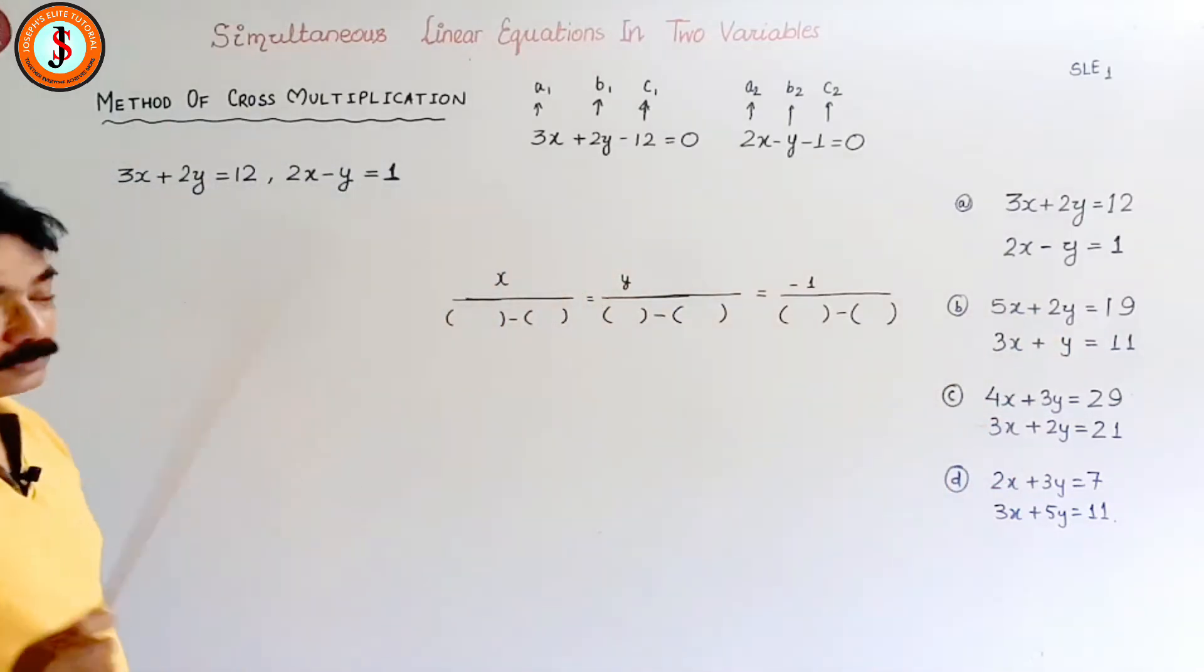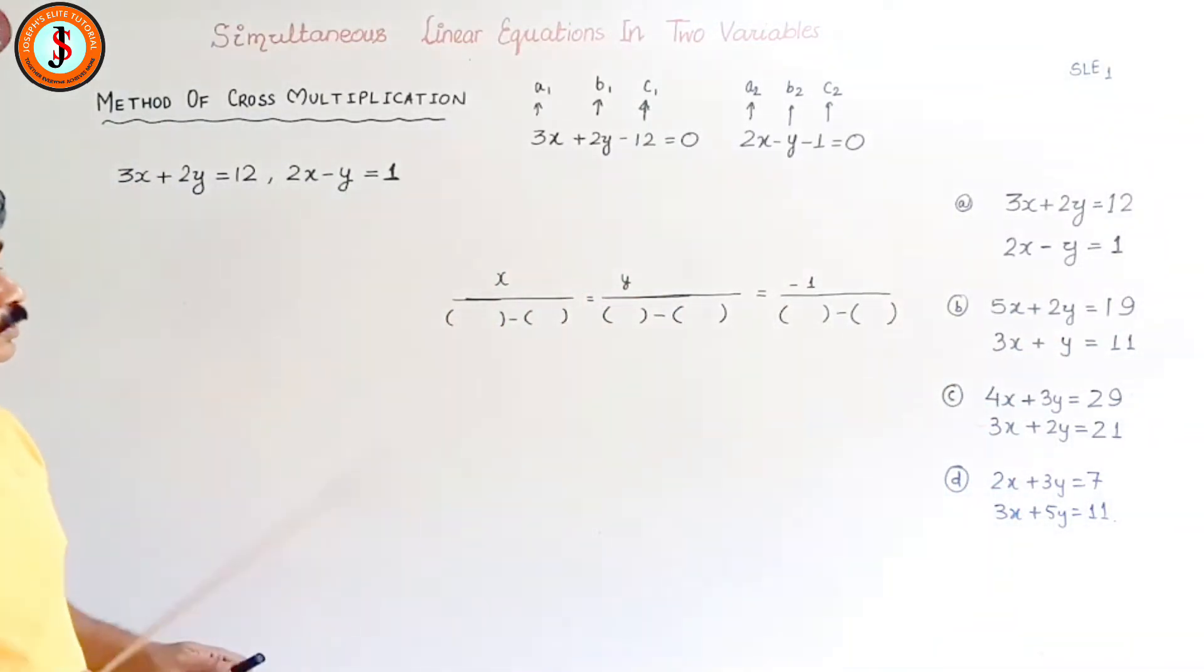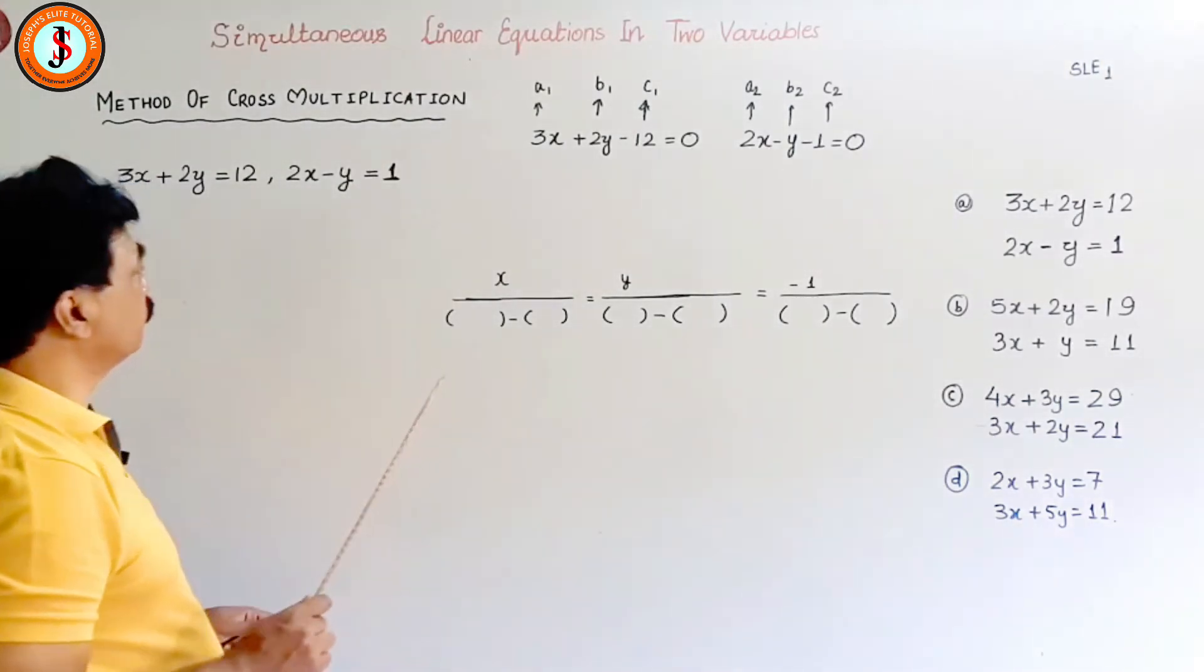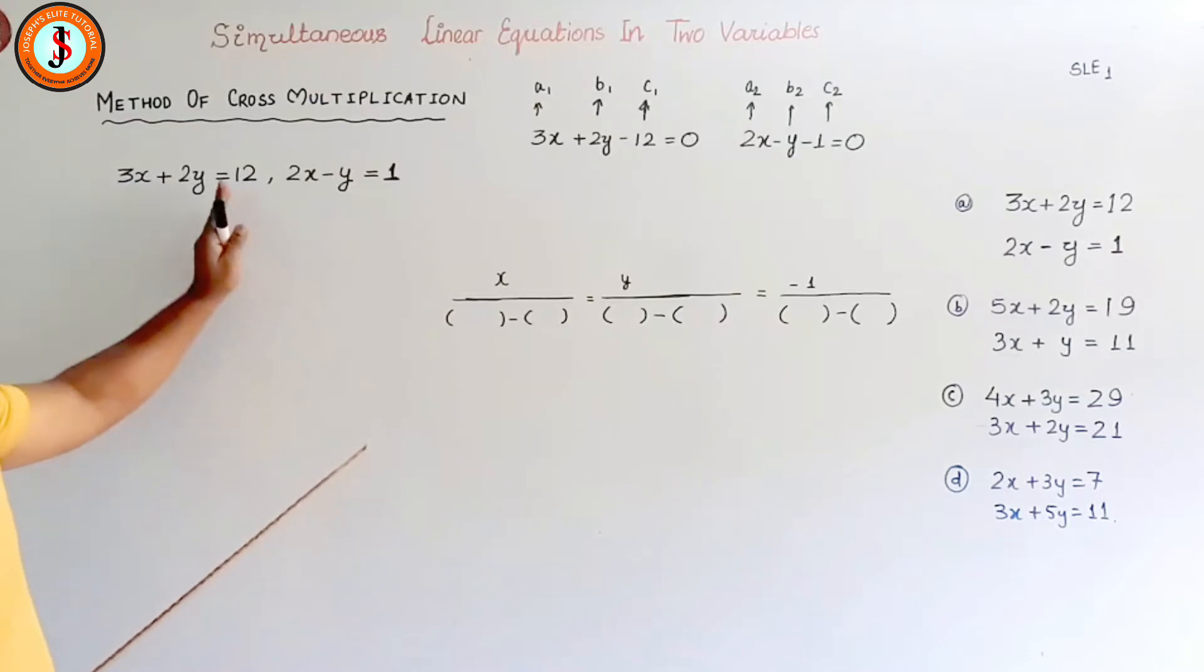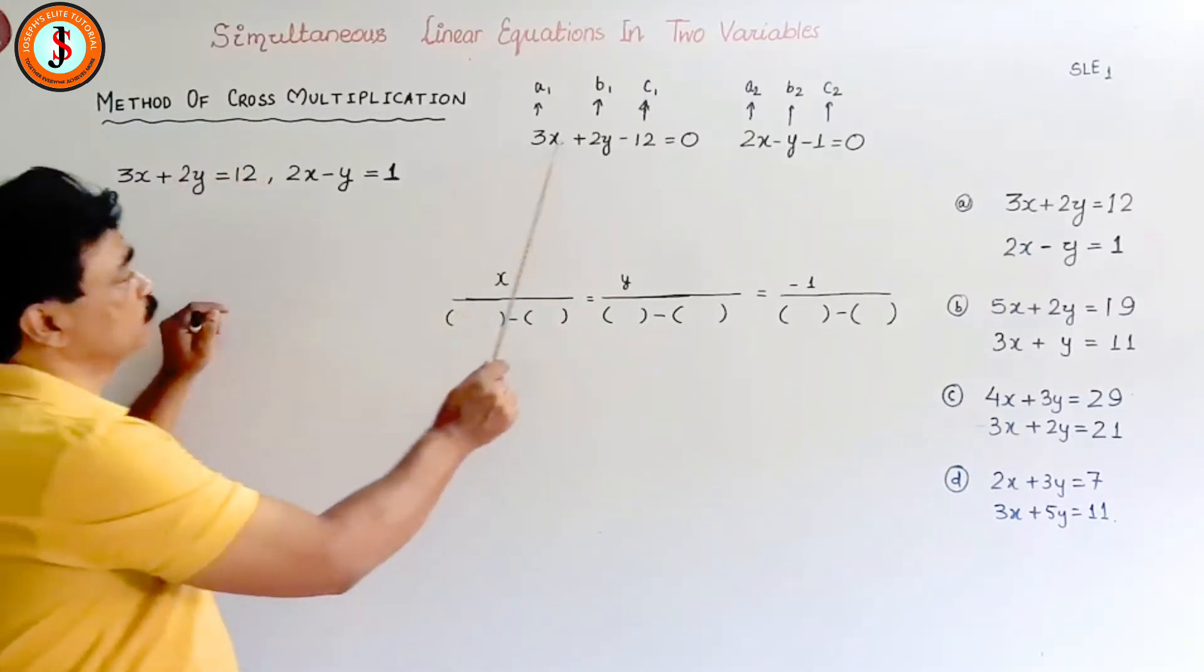I have written over here. The first thing you do is write your question in standard form of linear equation. Standard form means everything on one side, always there should be 0. That means 3x plus 2y is equal to 12 is given, so you bring 12 to this side, so 3x plus 2y minus 12 is equal to 0.